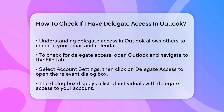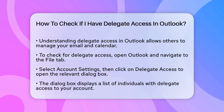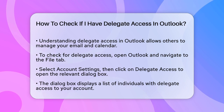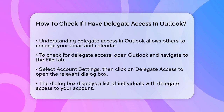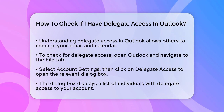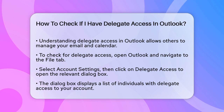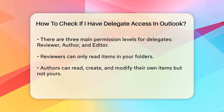It's a way to let someone else manage your email and calendar on your behalf. To see if you have this set up, you'll need to check your Outlook settings. Open Outlook and go to the File tab. From there, select Account Settings and then click on Delegate Access.